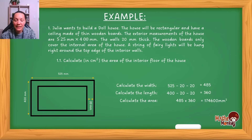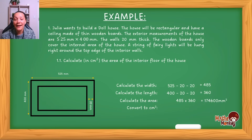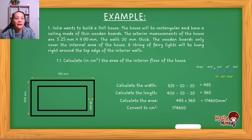The question asks for the answer in centimeters squared, so you're going to have to convert 174,600 mm² to cm². I have an entire lesson on how to convert units — you can find it in the measurement playlist. To convert from millimeters squared to centimeters squared, you divide by 10 squared. So my answer is 1,746 centimeters squared. That is the area of the interior floor of the dollhouse.